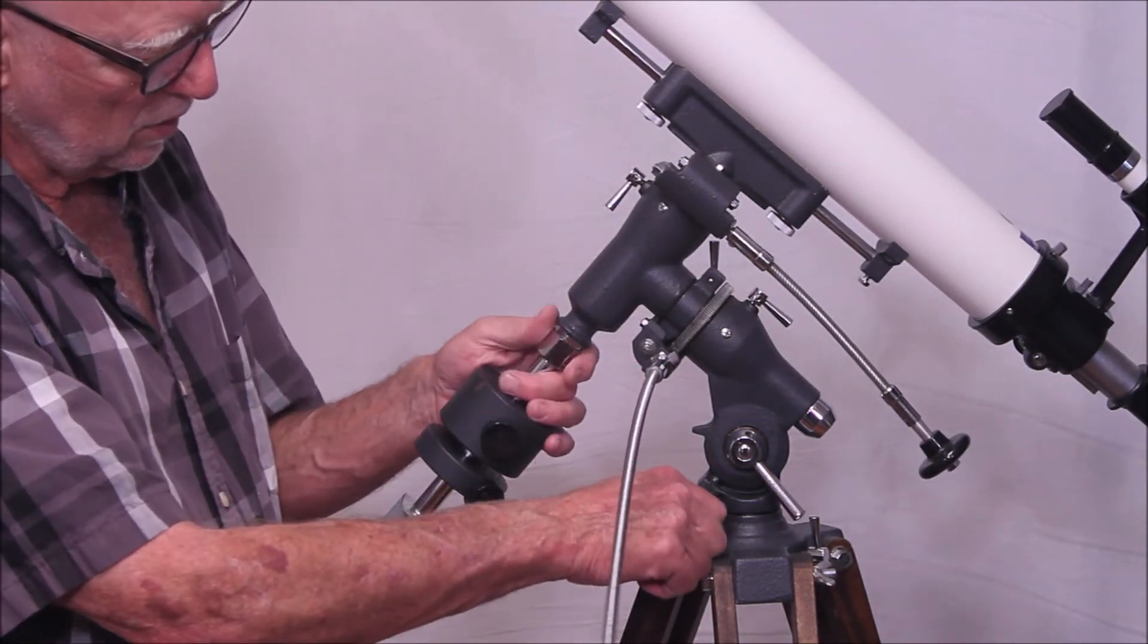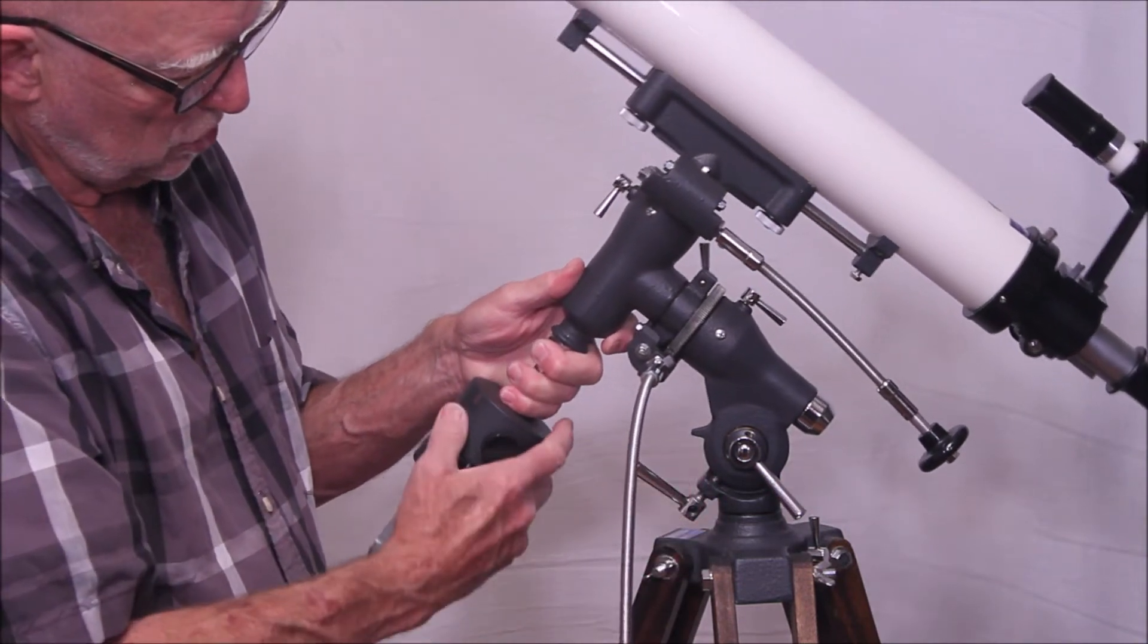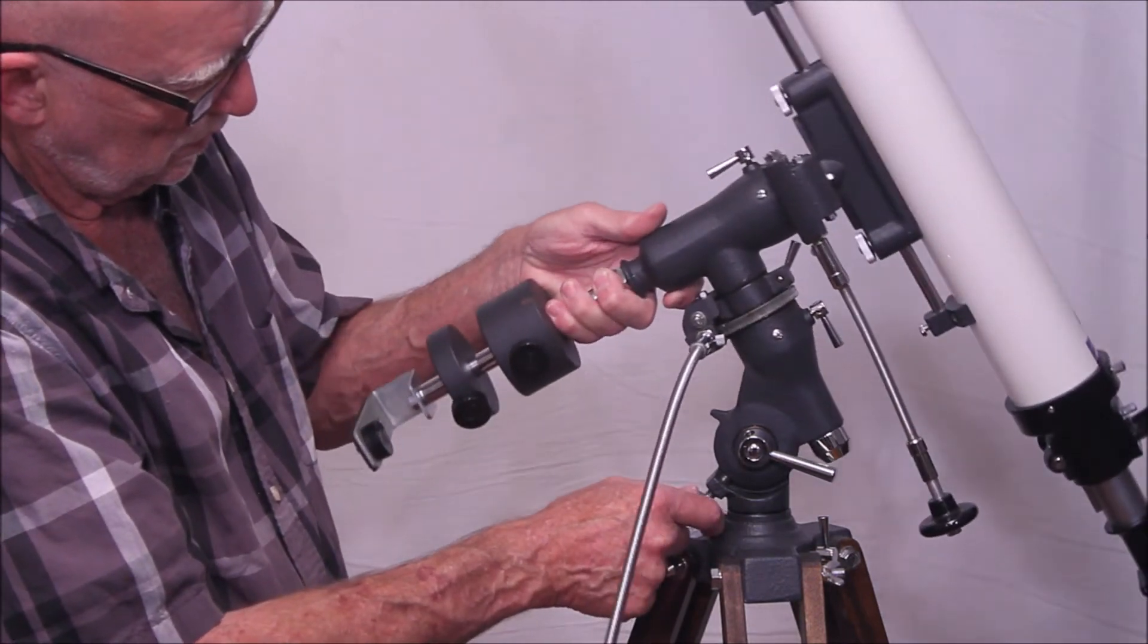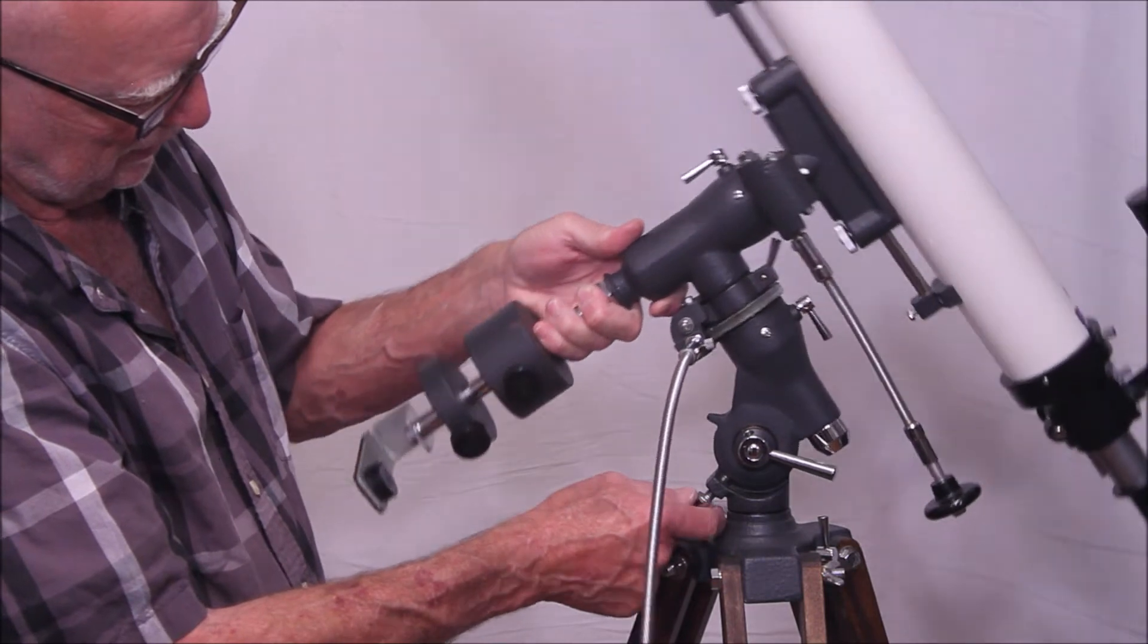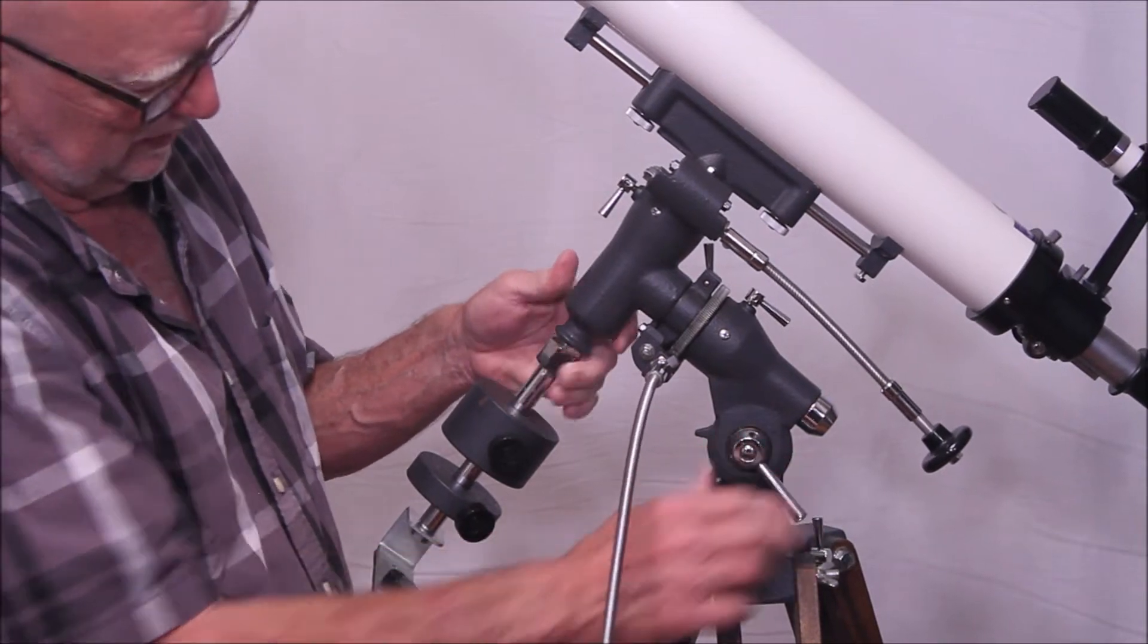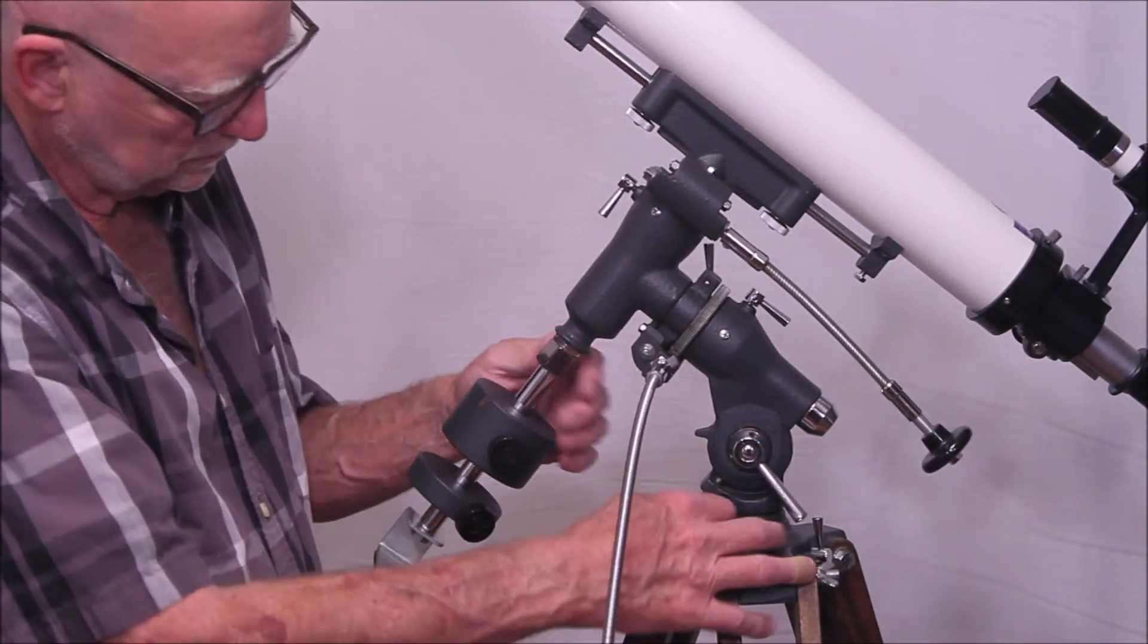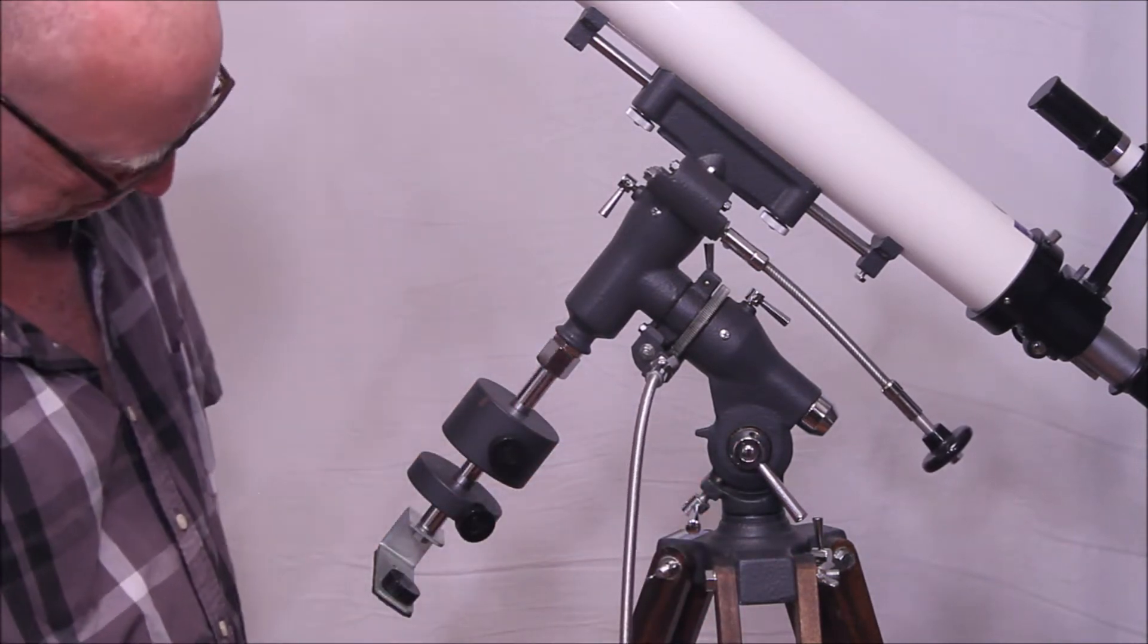Here's another sort of semi-interesting feature. Here's your, that's the locking mechanism for the altitude right there. Now this is kind of got a variable. Okay, so there's how you lock it down. Got the typical GOTO capstan bolt system.